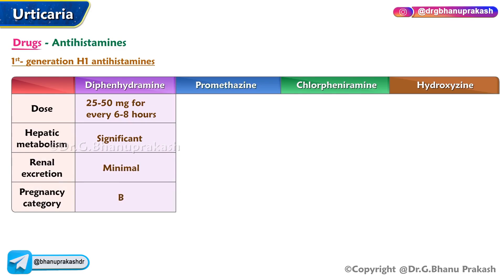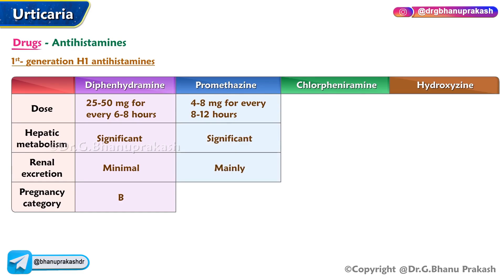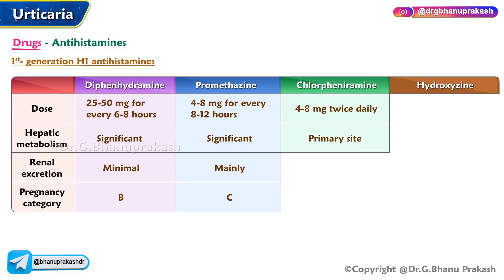Promethazine dose: 4 to 8 milligrams every eight to twelve hours; significant hepatic metabolism, mainly renal excretion, pregnancy category C. Chlorpheniramine dose: 4 to 8 milligrams twice daily; primary site of metabolism is the liver, mainly renal excretion, pregnancy category B.